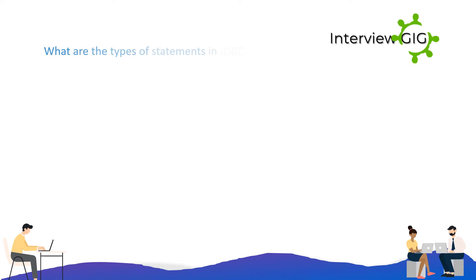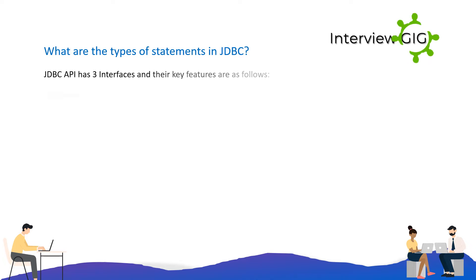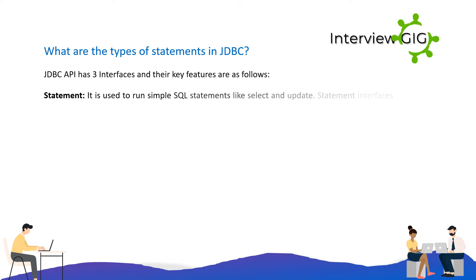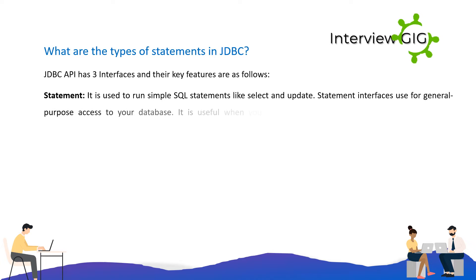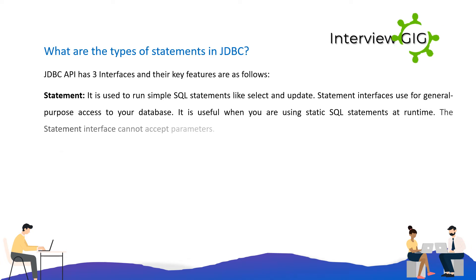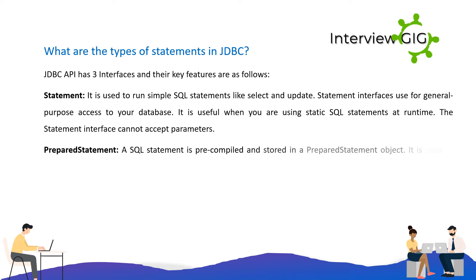What are the types of statements in JDBC? JDBC API has three interfaces. Statement: it is used to run simple SQL statements like SELECT and UPDATE. Statement interface is used for general-purpose access to your database. It is useful when you are using static SQL statements at runtime. The Statement interface cannot accept parameters.